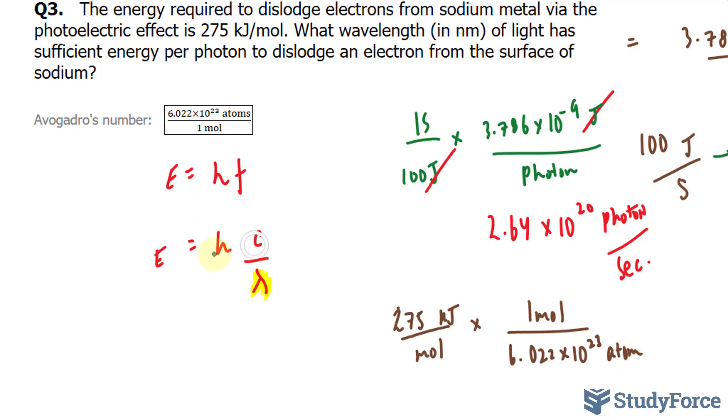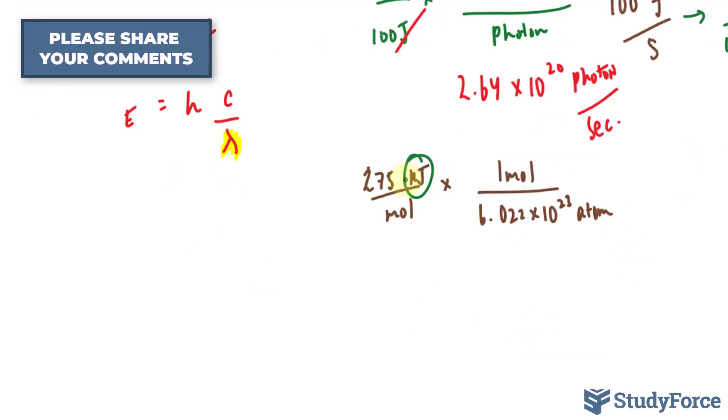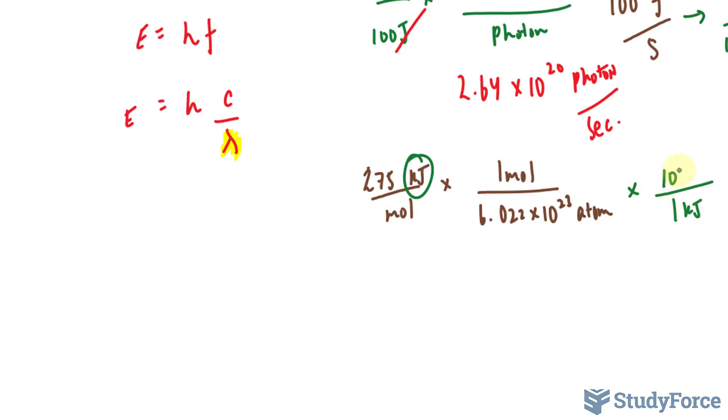Now to use this formula, the speed of light is in meters per second and Planck's constant is in joules times seconds, so we need this also in joules. The relationship with kilojoules and joules is 1 kilojoule equals 1,000 joules. So this unit and this unit will go away, leaving us with joules per atom.